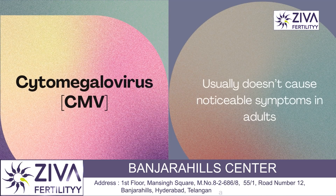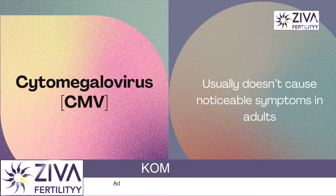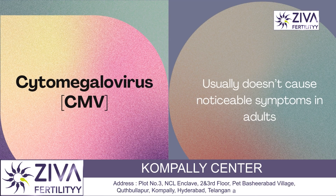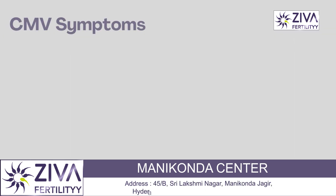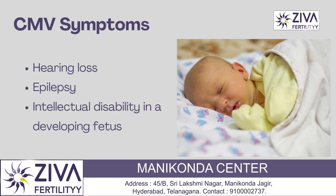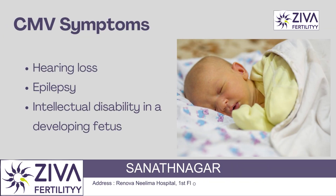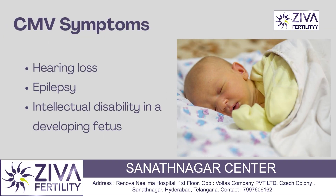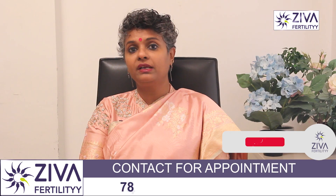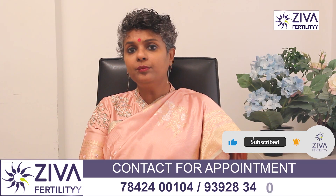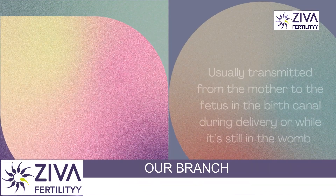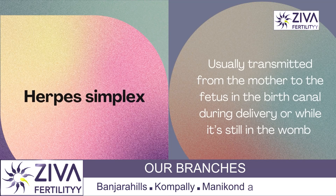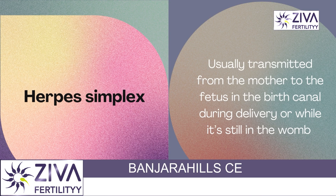Birth defects from rubella can include heart defects, vision problems, and delayed development. Next is Cytomegalovirus, or CMV — it's in the herpes virus family. It usually doesn't cause noticeable symptoms in adults; however, CMV can result in hearing loss, epilepsy, and intellectual disability in a developing fetus.